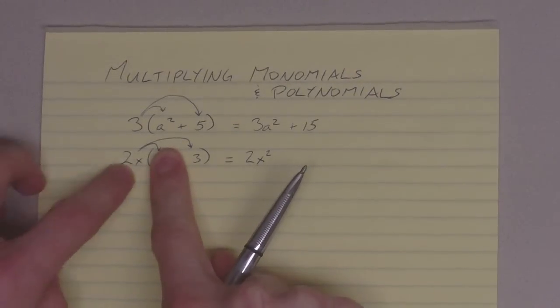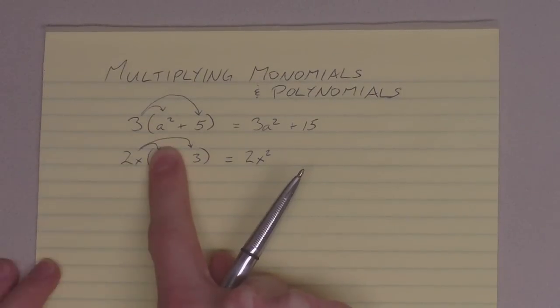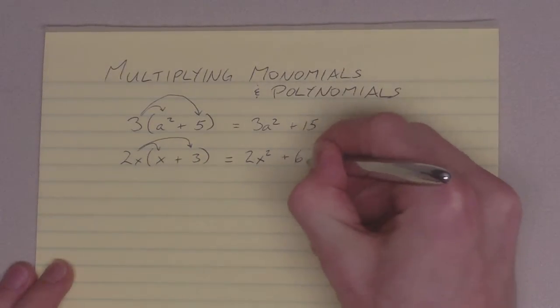Next step, we're going to multiply 2x times 3. Multiply the coefficients, add the exponents, in which case there are none over here, so we're just going to get 6x.